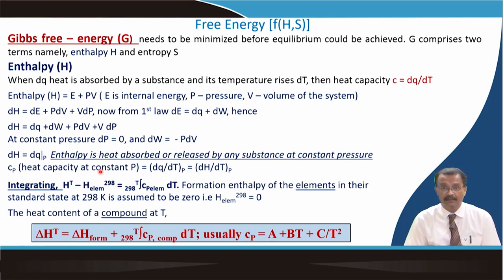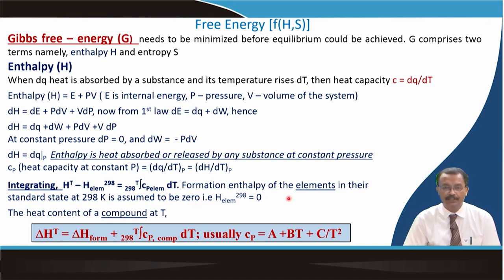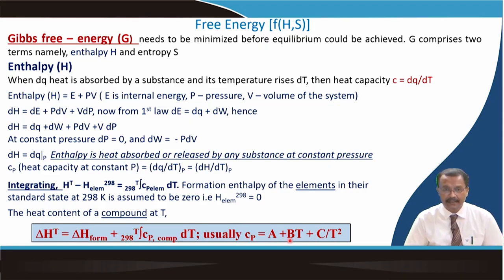The heat capacity at constant pressure, Cp, equals dH/dT at constant P. Integrating this gives the enthalpy relation. The formation enthalpy of elements in their standard state (around 298 K) is taken as zero — elemental enthalpy is zero. For a compound at a particular temperature, the enthalpy change is given by integrating Cp, where Cp is expressed as a power series A + BT + C/T², and A, B, C are constants, from which the value of the enthalpy change can be obtained.